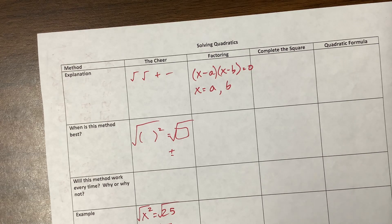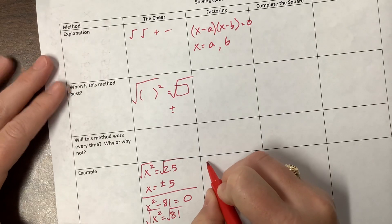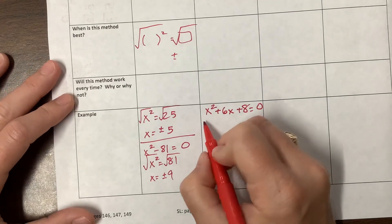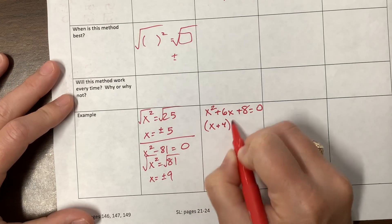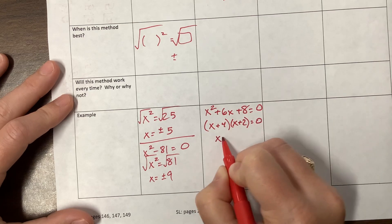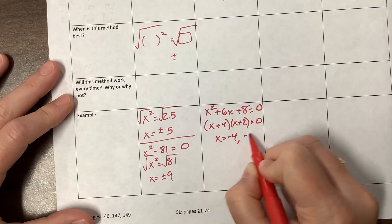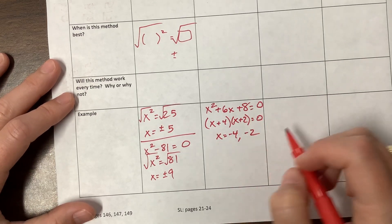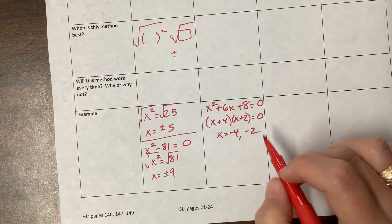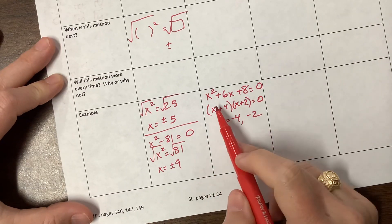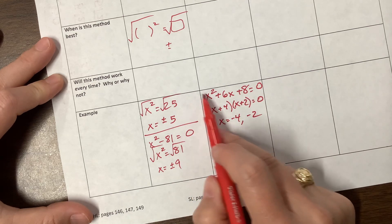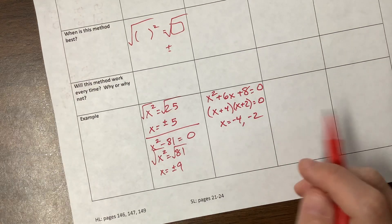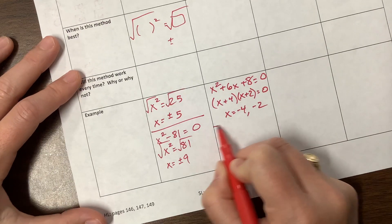The example: x squared plus 6x plus 8 equals 0. This factors to (x plus 4)(x plus 2) equals 0, therefore x equals negative 4 or negative 2. I'm assuming by the time you're in pre-cal or IB math that this is pretty straightforward. When the leading coefficient is 1, you should be able to factor with guess and check. I'll show my favorite method for factoring in just a second.